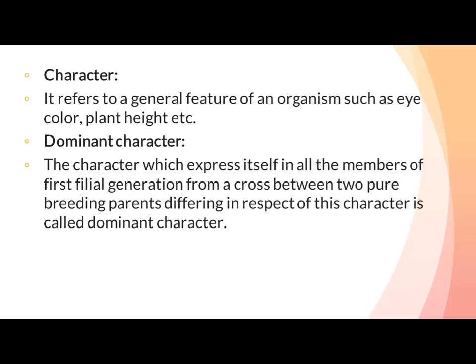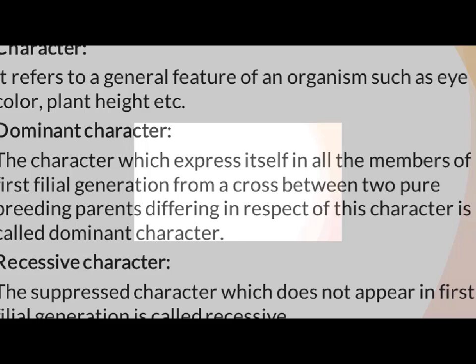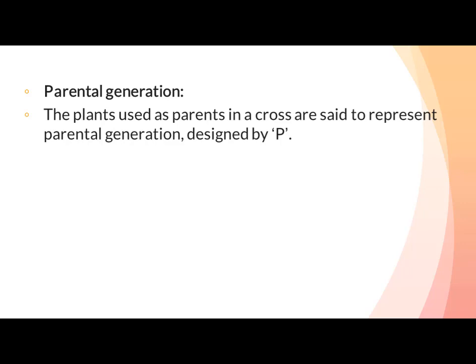Dominant Character: The character which expresses itself in all members of the first filial generation from a cross between two pure breeding parents is called dominant character. وہ character جو F1 generation کے تمام members میں اپنے آپ کو show کرے اسے dominant character کہتے ہیں — cross میں homozygous dominant اور homozygous recessive gene لیتے ہیں۔ Recessive Character: The suppressed character which does not appear in the first filial generation is called recessive character. Parental generation — the plants used as parents in a cross — is designated by P.